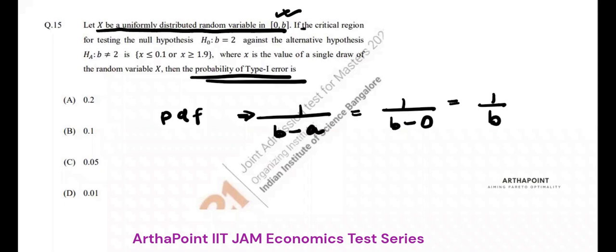Now, if critical region for hypothesis for testing, the null hypothesis H₀ is such that B is equal to 2, against the alternative hypothesis H₁ is B not equal to 2.